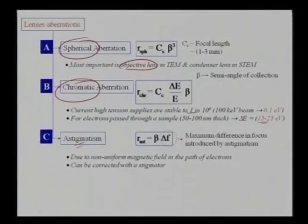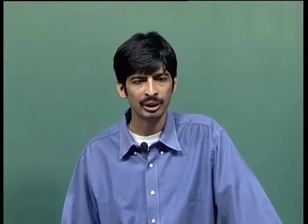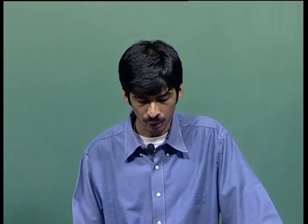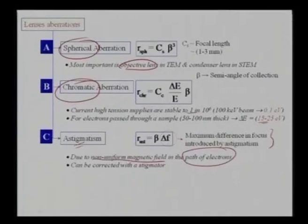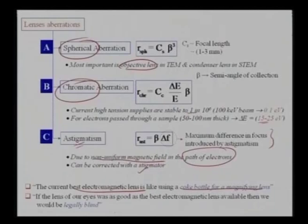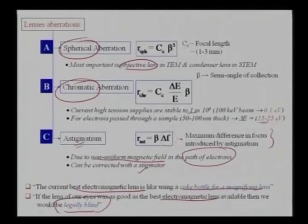Astigmatism means that beams traveling horizontally and vertically do not focus at a single point. This is because lenses may be stronger at certain points, causing them to focus at different lengths. Astigmatism means the vertical and horizontal scales do not match up properly due to non-uniform magnetic fields in the electron path, and can be corrected using a stigmator. With all these aberrations, even the best electromagnetic lenses are like using a coke bottle as a magnifying lens — so much aberration exists that if we scale it to our eyes we would be legally blind.